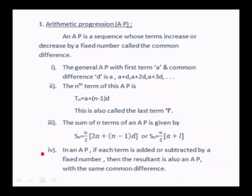Arithmetic Progression (AP): An AP is a sequence whose terms increase or decrease by a fixed number called the common difference. The general AP is written as A, A+D, A+2D, A+3D, etc. The nth term is Tn = A + (n−1)D, also denoted by l. The sum to n terms is Sn = n/2 × [2A + (n−1)D], or equivalently Sn = n/2 × (A + L), where L = A + (n−1)D.